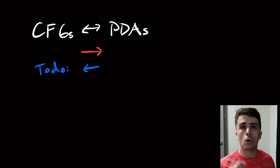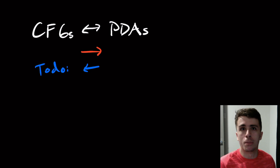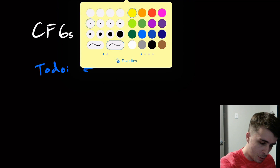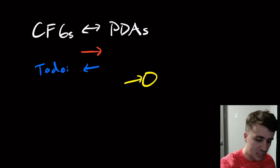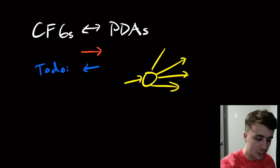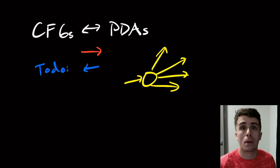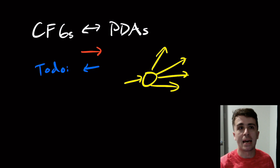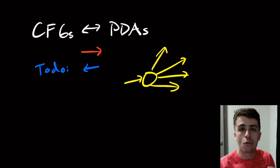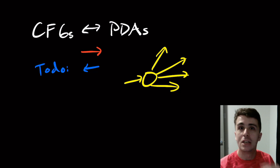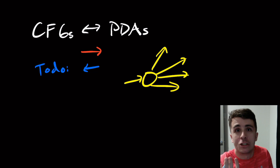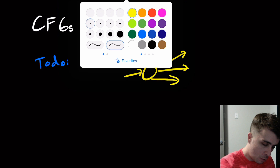We're going to do this in several stages. The first stage is that we're going to assume something about the PDA. You might think: if you're working with an arbitrary PDA, how can you assume anything about it? In principle there could be any set of transitions out of the start state. But what we're going to do is modify the PDA without changing its language — and that's exactly what we want.